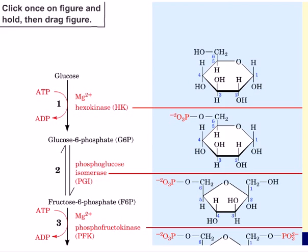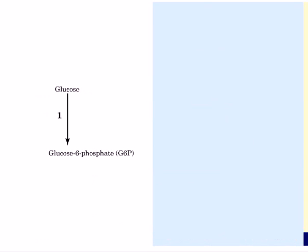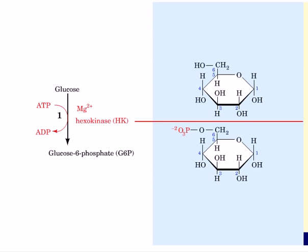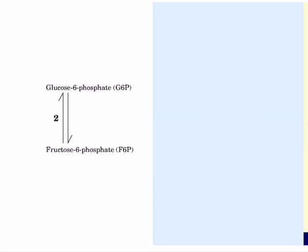Hello and welcome friends. In this video tutorial we will be looking at the steps of glycolysis. The first reaction is the conversion of glucose to glucose 6-phosphate. This reaction is catalyzed by hexokinase and it requires ATP and magnesium ion. The gamma phosphate of ATP is transferred to the C6 hydroxyl of glucose, making glucose 6-phosphate.